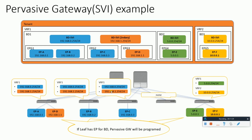Here it's showing with an example how pervasive gateway works. In this example we have endpoints A, B, C, D, E, and F. Endpoints A, B, C, D are under the same bridge domain BD1, and endpoints E and F are under bridge domain BD2.